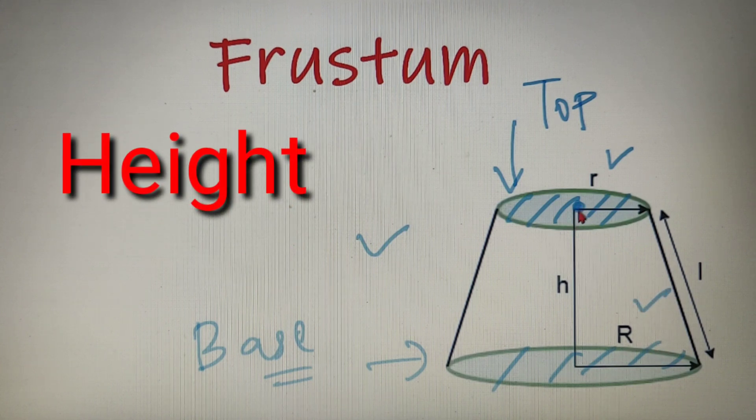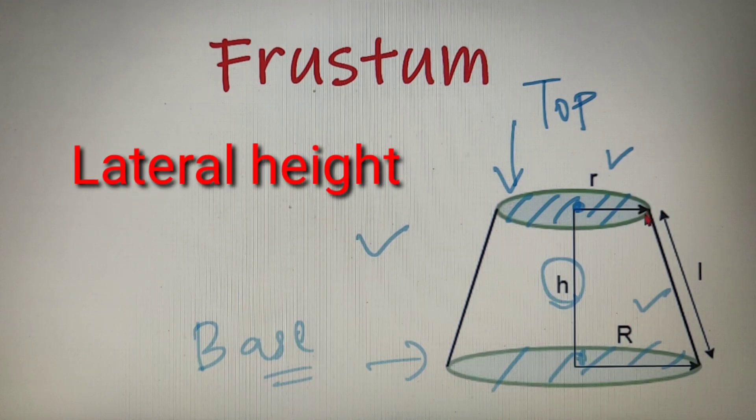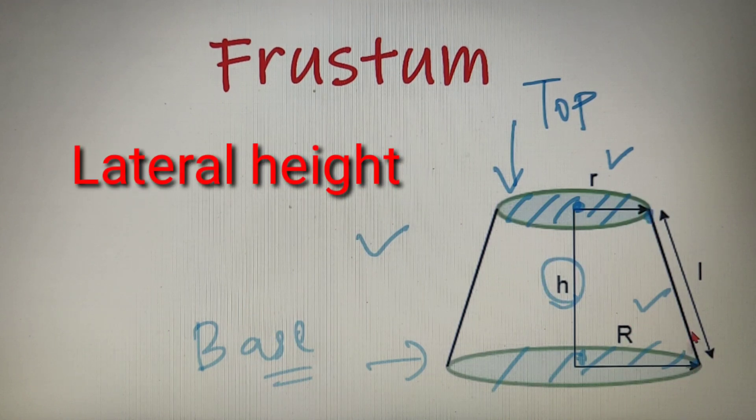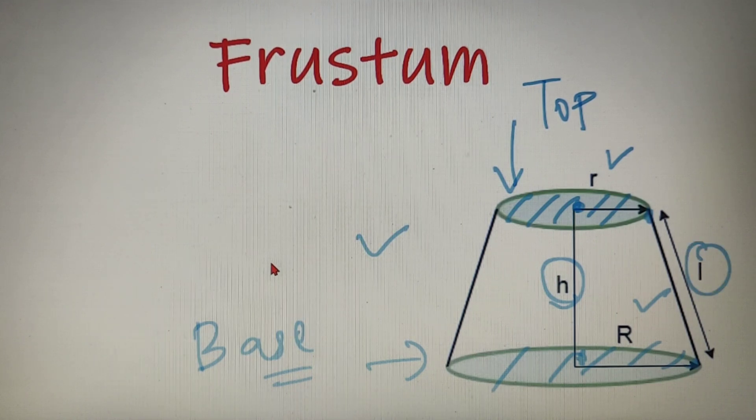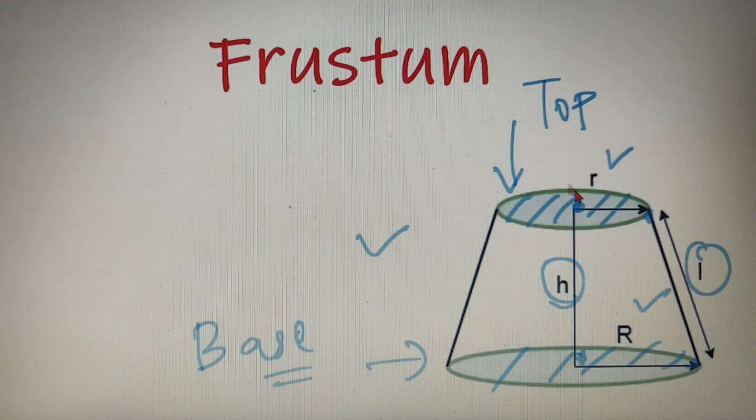Now the distance between the centers of both these bases is known as the height of the frustum and the shortest distance between the circumference of these two bases is known as the lateral height of the frustum. Now done with the basic terminology, let's see how a frustum is actually formed.